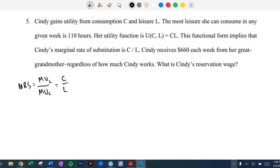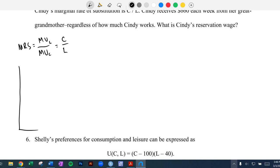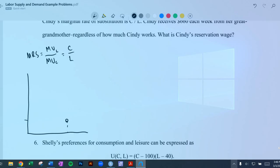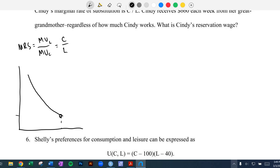And then just a quick reminder about how we think about reservation wage from the labor-leisure theory. If we had some point where we're starting, then there will be some level, some wage passing through this utility that is exactly tangent at that endowment point.